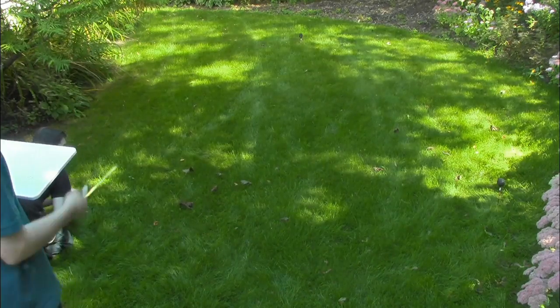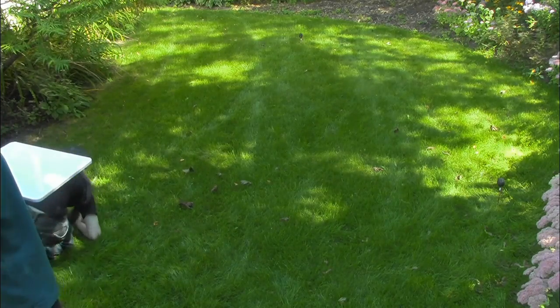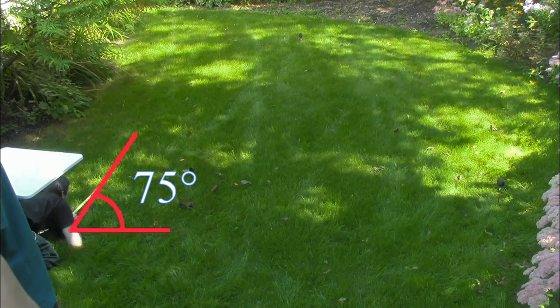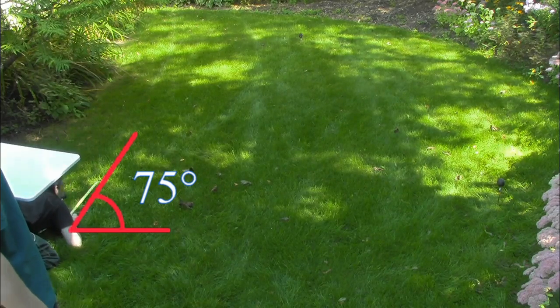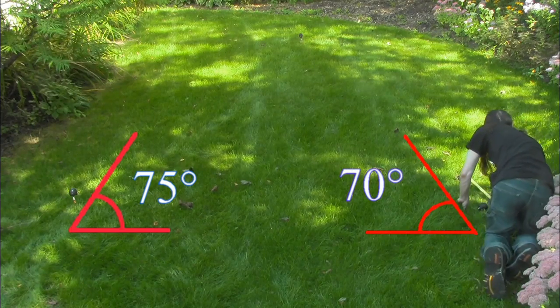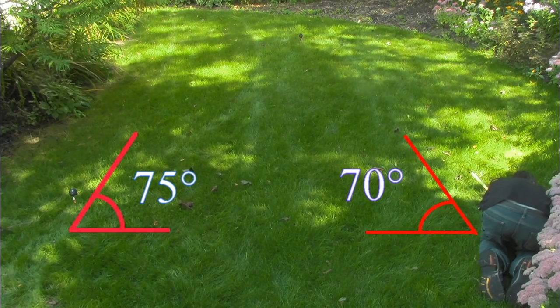We then measured the two angles at which the object was being observed. The angle on the left was measured at 75 degrees. We'll call this angle B. The angle on the right was measured at 70 degrees and we can call that angle C.